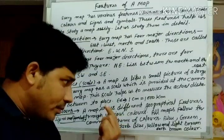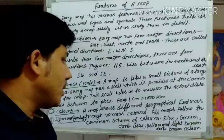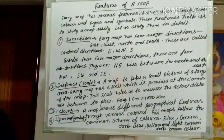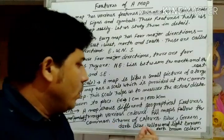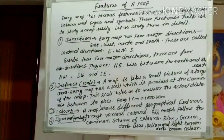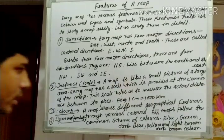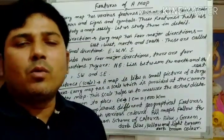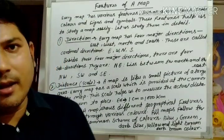Green color is used for forest areas. Dark blue color is related to deep water or special geographical features. Hills and mountains are shown in dark brown color. We will continue with more details in the next video.